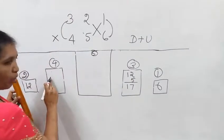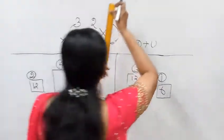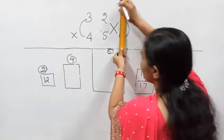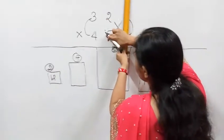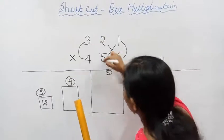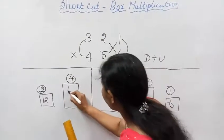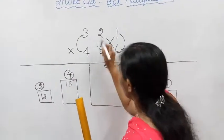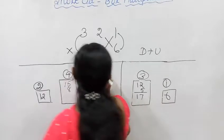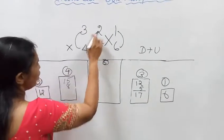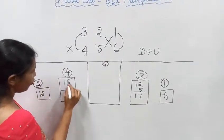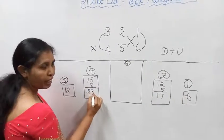Now I am going to do the 4th box. Hide this column. Then: 3 fives are 15, 4 twos are 8. That is 15 plus 8 is 23.